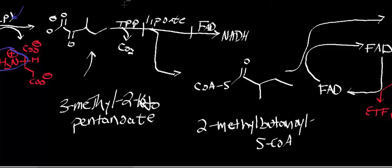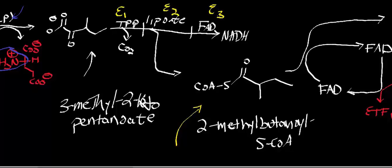They're all mechanistically identical. The enzyme that uses thiamine pyrophosphate (TPP) to decarboxylate is termed alpha-ketoacid dehydrogenase — specifically, branched-chain alpha-ketoacid dehydrogenase — and it does the decarboxylation. Enzyme 2 is dihydrolipoyl transacylase, which forms 2-methylbutanoyl-S-CoA. Enzyme 3 is dihydrolipoyl dehydrogenase, and that gives us our first NADH — our first energy-yielding reaction. The 2-methylbutanoyl-S-CoA will go further in catabolism.